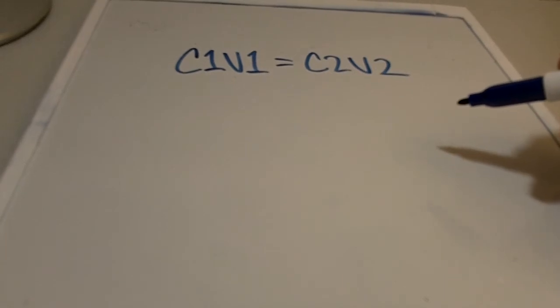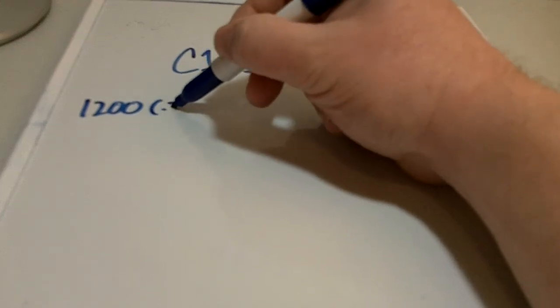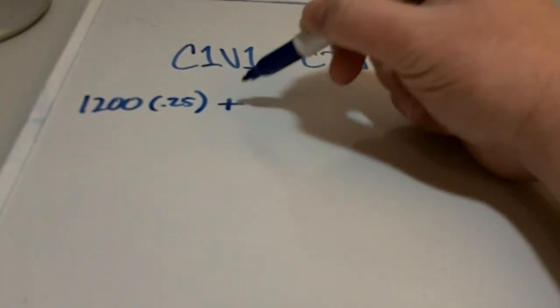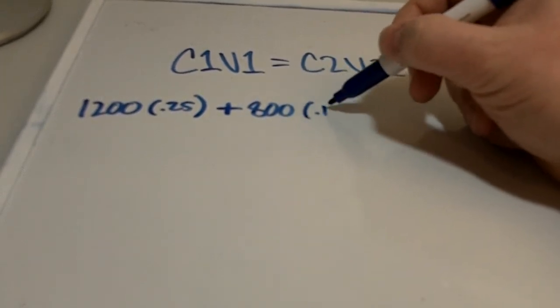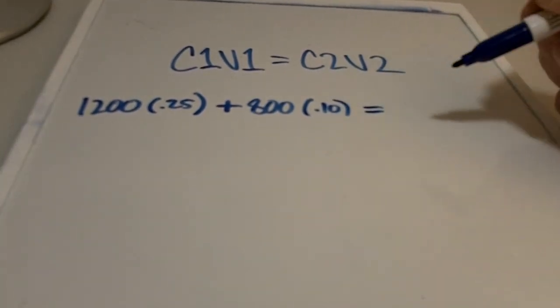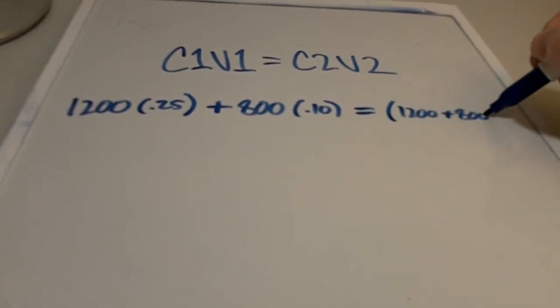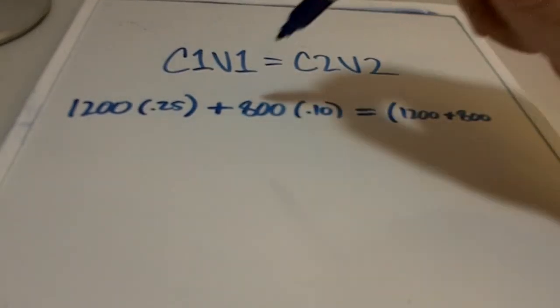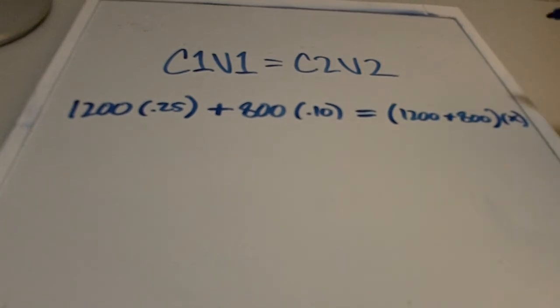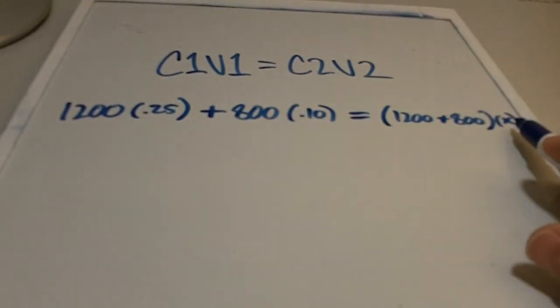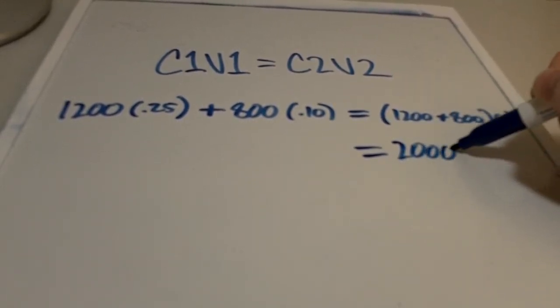So similar to our first one, let's say we had 1,200 milliliters of a 25% solution. And then we're going to add to that 800 milliliters. But instead of being water this time, it's a 10% solution. And so over on this side, again, we have 1,200 plus 800, which we got from these volumes here. But we don't know what the percentage is going to be. So that's our unknown. So we're basically just writing out what we know and solving for x.